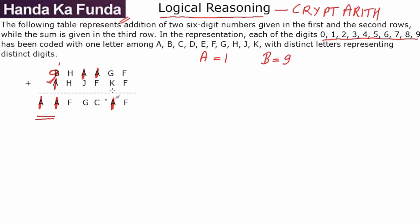Does B appear anywhere else? No. Let's see what else I can figure out. I have H, H and F, and that should generate a carry. If I have 6 and 6, then 12; 7 and 7 gives 14; 5 and 5 gives 10. This doesn't really help me because a lot of numbers added with themselves will generate a carry.